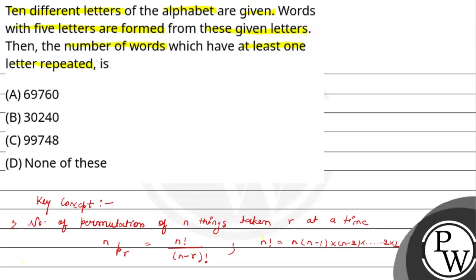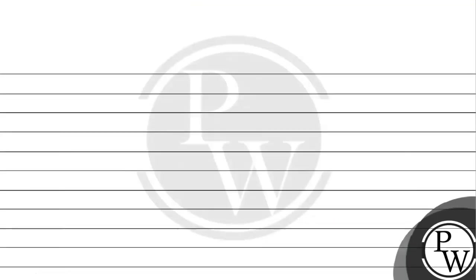Let's understand what this means. 10 different letters of the alphabet are given. Words with 5 letters are formed from these given letters. We are asked for the number of words which have at least one letter repeated. The total number of letters given is 10.